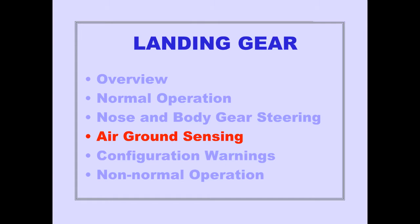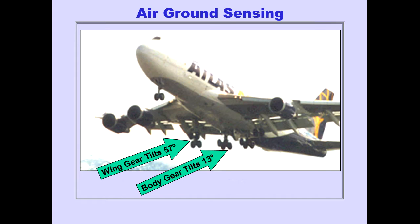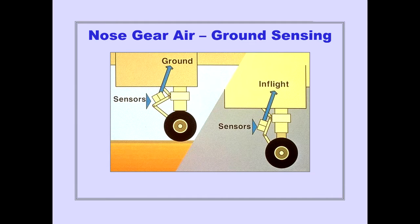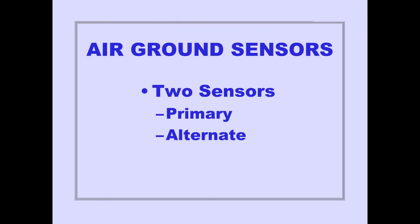The wing and body gear tilt after takeoff to fit into the wheel wells. This tilt function also provides air ground sensing for certain airplane systems. Nose gear sensors also provide air ground sensing for certain airplane systems. With a compressed nose gear strut, the sensors provide a ground mode signal; an extended strut provides an in-flight mode signal. To ensure reliability, each main landing gear and the nose gear have primary and alternate air ground sensors.